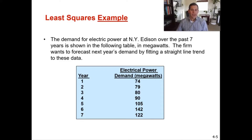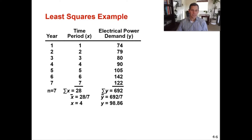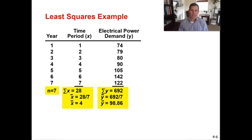Now let's calculate. Our x and y were given to us — we know the time periods and the electrical power demand. Step one: determine n, the number of periods. There are seven years, so n equals seven. Next, take the sum of all x values: 1 + 2 + 3 + 4 + ... = 28. To get x-bar, divide 28 by n of seven, giving you an x-bar of four.